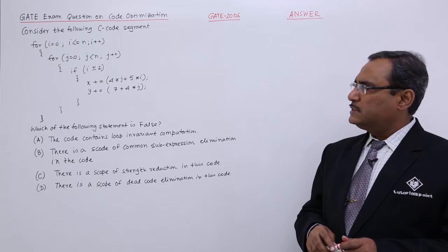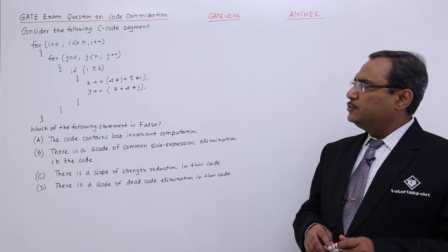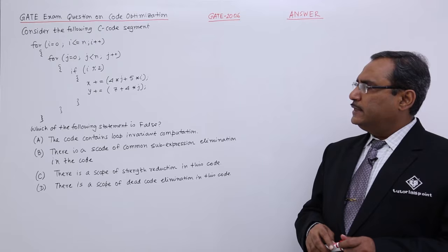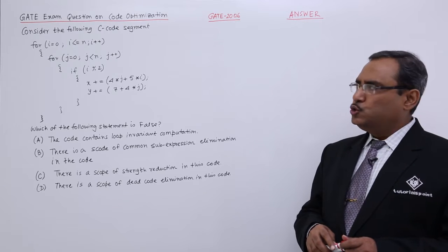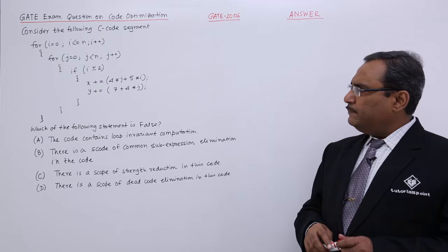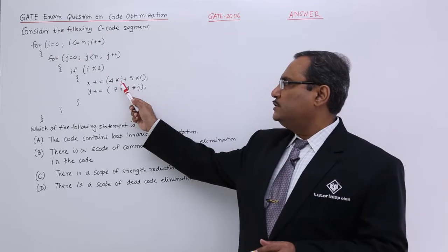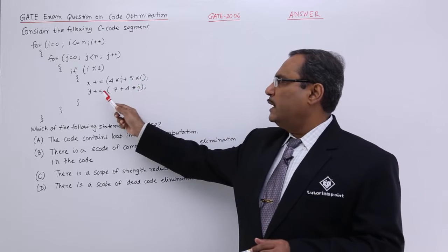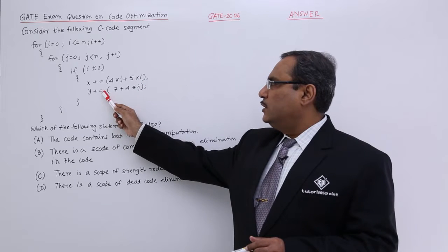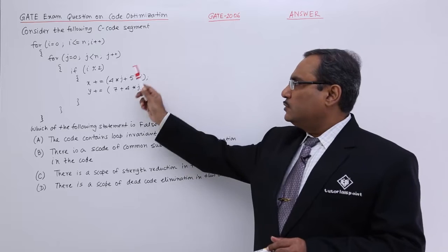For j is equal to 0, j less than n, j plus plus, if i mod 2, then x plus equal to this expression 4 star j plus 5 into i, and y plus is equal to 7 plus 4 star j and so on.